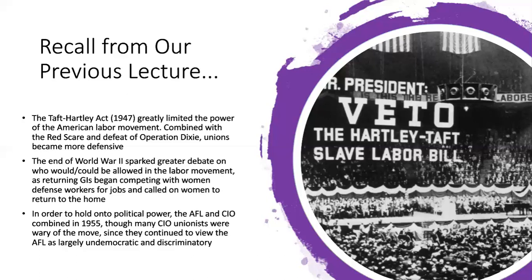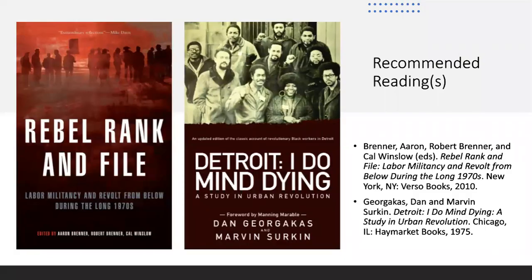There was a longstanding discrepancy between craft and industrial unionism in the AFL and CIO, and when these two federations merged, they were forced to make those two models work together. For reading recommendations, if the long 1970s and labor rebellions interest you, I recommend Rebel Rank and File — a collection of labor history essays that each look at a different rebellion within the labor movement during this period.